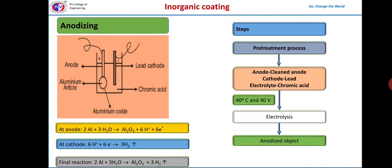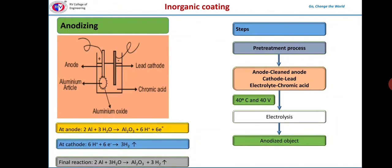These are the reactions taking place during the anodizing process. At anode, aluminum undergoes oxidation. At cathode, there is the liberation of hydrogen gas. The final reaction is aluminum gets converted to aluminum oxide.